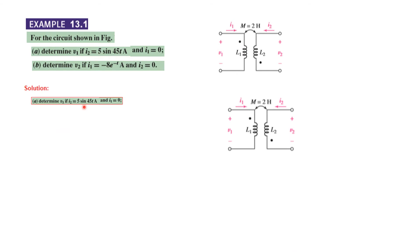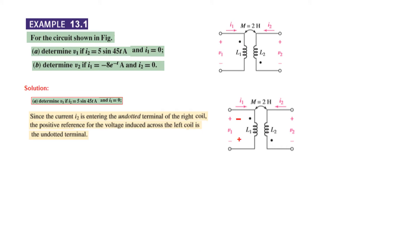For the first part: I2 is given and I1 is 0, so I1 has no effect. The voltage is induced in the primary side. The key point to note is that this current is entering the non-dotted terminal. Therefore the non-dotted terminal on the primary side will become positive — so this becomes positive and the top becomes negative. Therefore the voltage V1 will have a negative sign.